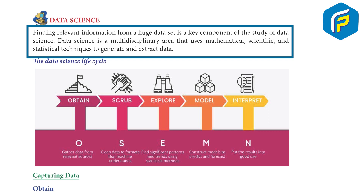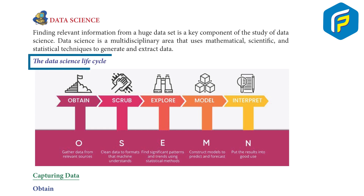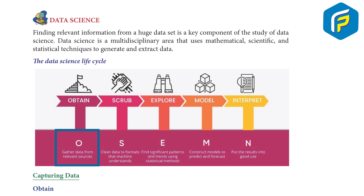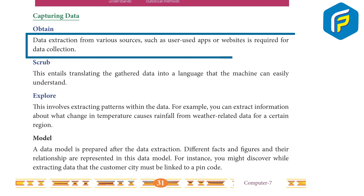Data science: finding relevant information from a huge data set is a key component of the study of data science. Data science is a multi-disciplinary area that uses mathematical, scientific, and statistical techniques to generate and extract data. The data science life cycle: obtain — gather data from relevant sources; scrub — clean data into a format machines understand; explore — find significant patterns and trends using statistical methods; model — construct models to predict and forecast; interpret — put the results into good use.